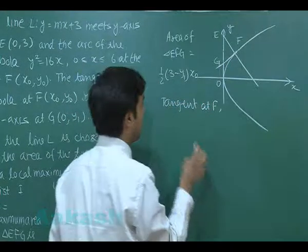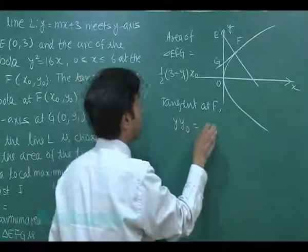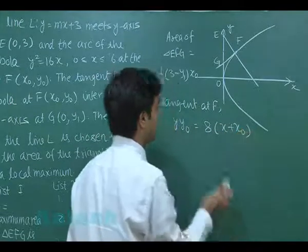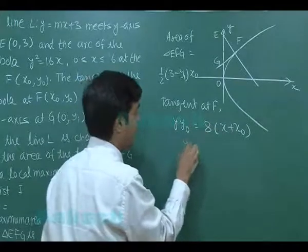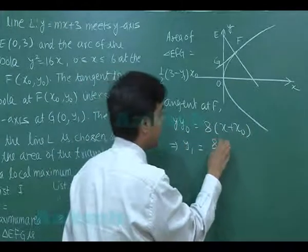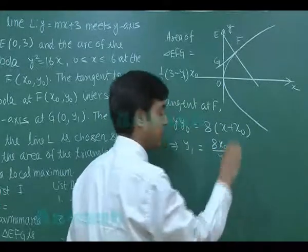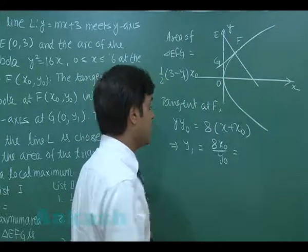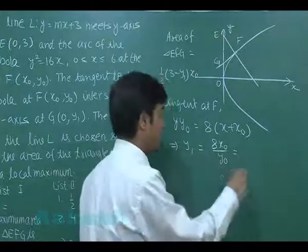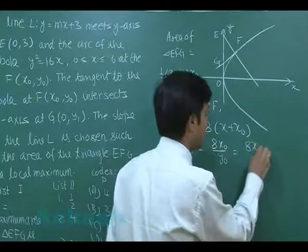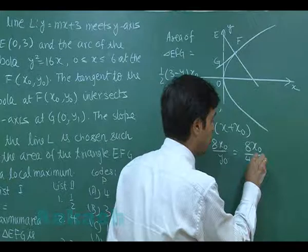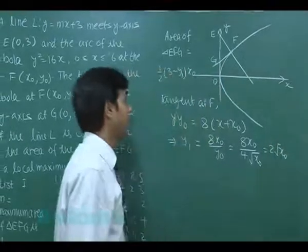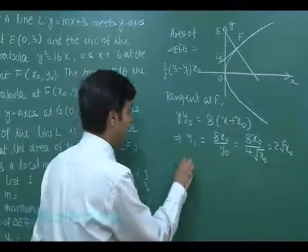y₁ comes from the tangent at F. For the parabola y²=16x, the tangent at F is: y·y₀ = 8(x + x₀). Putting x=0 gives y₁ = 8x₀/y₀. Since (x₀, y₀) lies on the parabola, y₀² = 16x₀, so y₀ = 4√x₀. Therefore y₁ = 8x₀ / (4√x₀) = 2√x₀.